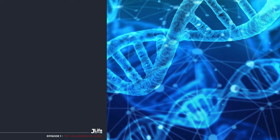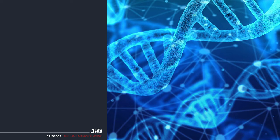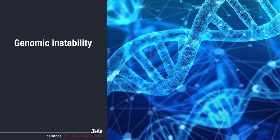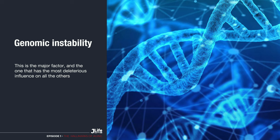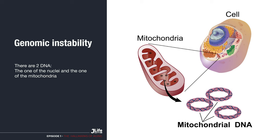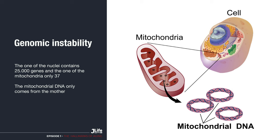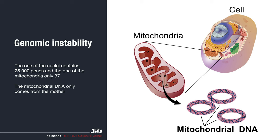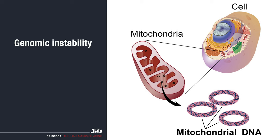We can now better understand the why and how of certain signs of aging. Let's start with the first one: genomic instability — that is to say, the consequences of the damage that our DNA undergoes permanently. This is the major factor and the one with the most deleterious influence on all of the others. In fact, there are two DNAs: the one in the nucleus and the one in the mitochondria. The nuclear DNA contains 25,000 genes and the mitochondrial DNA only 37, but with a major particularity: mitochondrial DNA only comes from the mother.